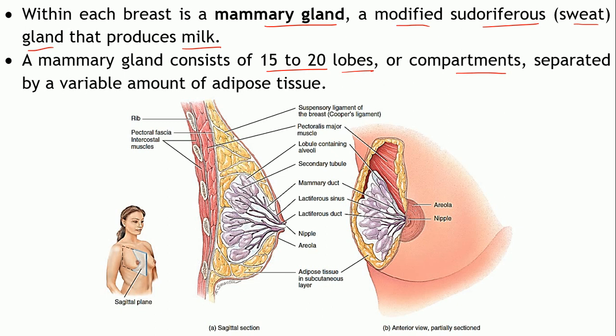These lobes may be separated by a variable amount of adipose tissue, as seen in the diagram. There are around 15 to 20 such lobes within each breast.